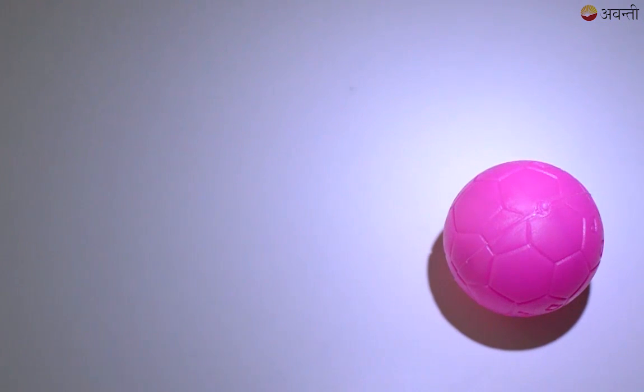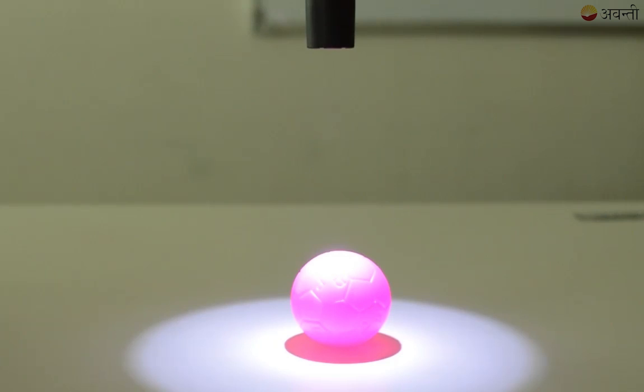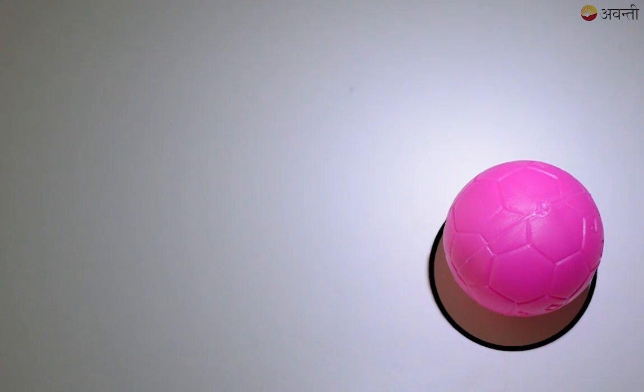Now for the first position, I am going to place the torch above the ball. Now since the torch is placed exactly above the ball, the shadow that I am going to get is going to be circular in shape. So the first conic section that I am getting is a circle.